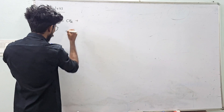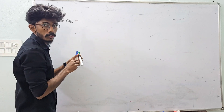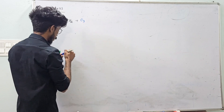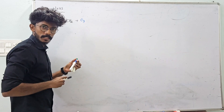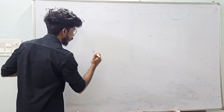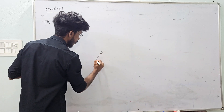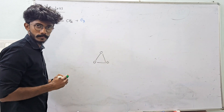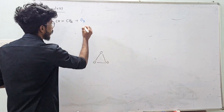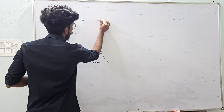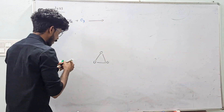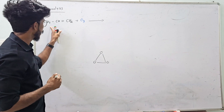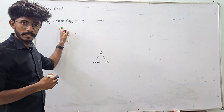Ozone is applied to the alkene. When we are reacting with ozone, we will break the molecule into two parts.